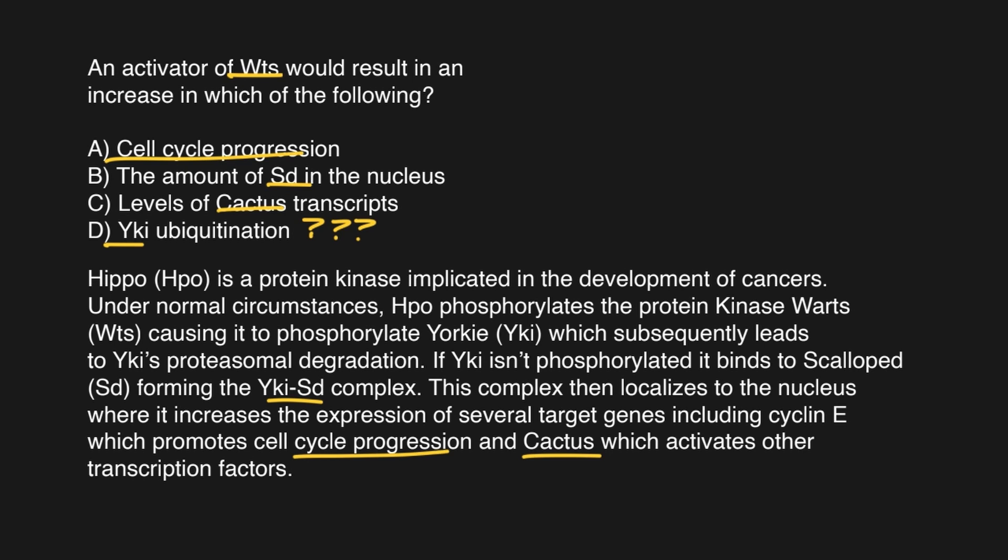So here it starts. HPO is a protein kinase implicated in the development of cancers. That's irrelevant. We don't actually care about HPO. That's not where we're starting. It says under normal circumstances, HPO phosphorylates the protein kinase WARTs. Okay, so in this particular case here, we don't really care about HPO phosphorylation because again, that's not where our pathway starts. So we'll just start with WARTs because that's where we're jumping in. That's WTS. What does it do? It says it phosphorylates YORKE. So we'll go ahead and draw this arrow between these two. So presumably if we activated or upregulated WTS, we would also upregulate the amount of YORKE that is phosphorylated.